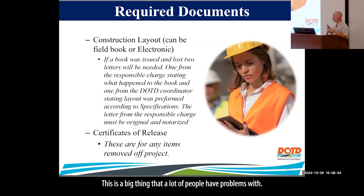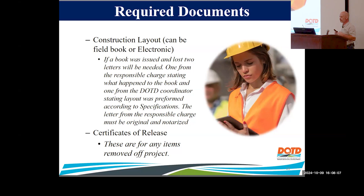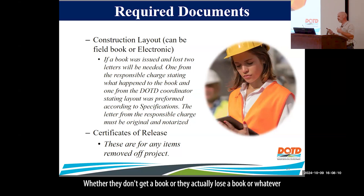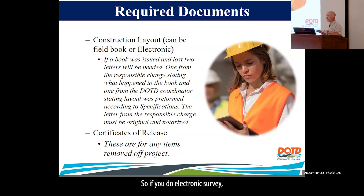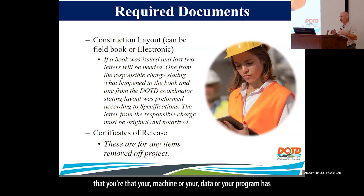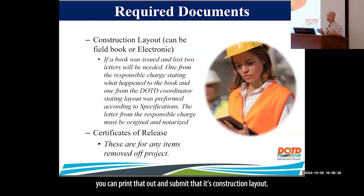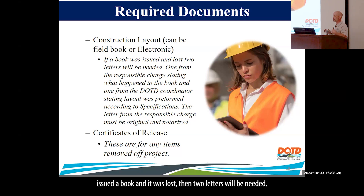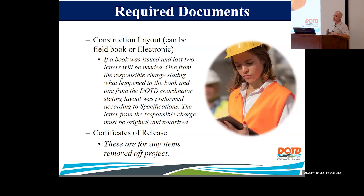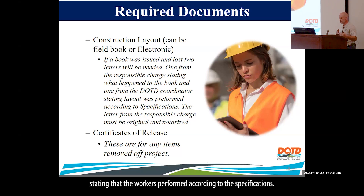Construction layout is a big thing a lot of people have problems with — they don't get a book, they lose a book, or whatever it may be. If you do electronic survey, you can submit a printout from your machine or program as construction layout. We do have a policy that if you were issued a book and it was lost, two letters will be needed: one from the responsible charge stating what happened, and one from the coordinator stating the work was performed according to specifications.